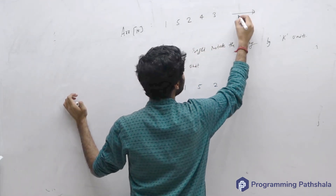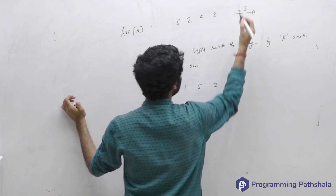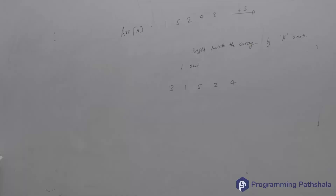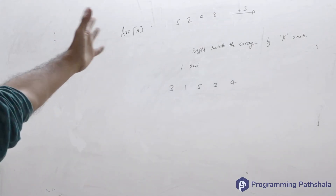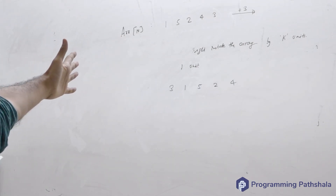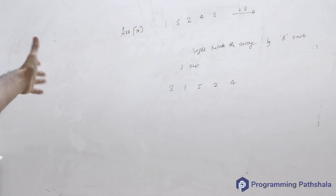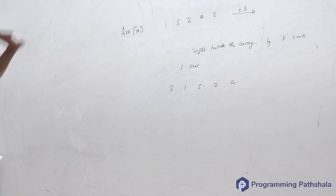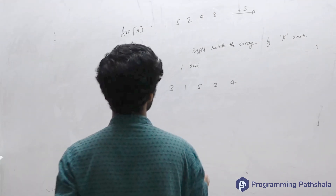So if you right rotate by one unit you will get 3, 1, 5, 2, 4. Can anyone tell me that if I right rotate this by three units, what will I get? That's right — 2, 4, 3, 1, 5. Because when you right rotate for the first time 3 comes to the beginning, the second time 4 comes, and the third time 2 comes. So you end up getting 2, 4, 3, 1, 5.